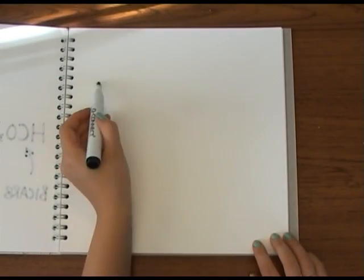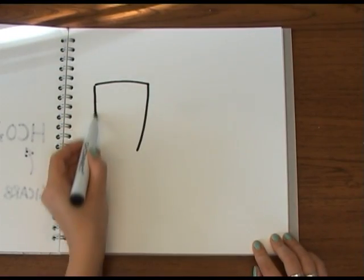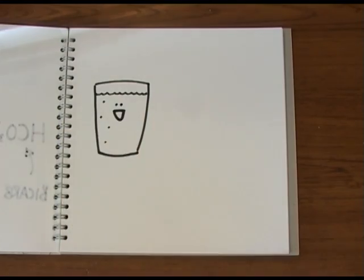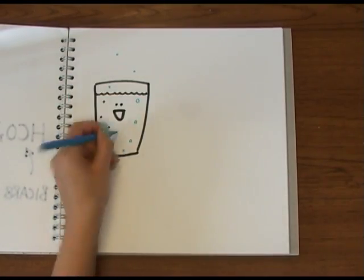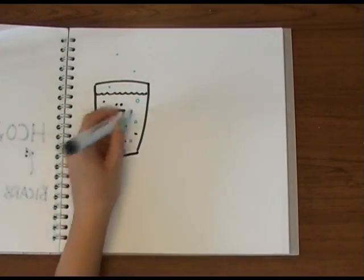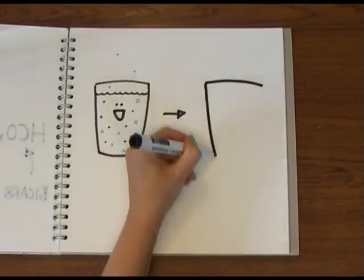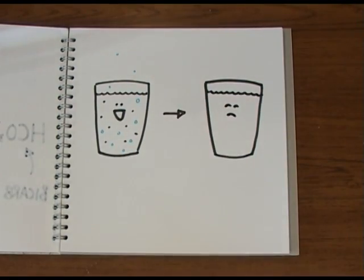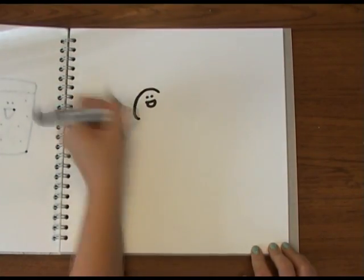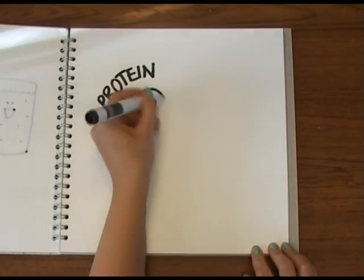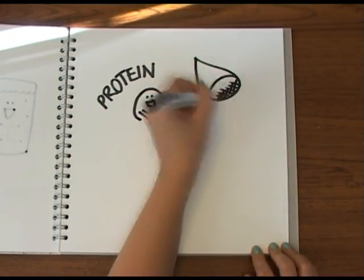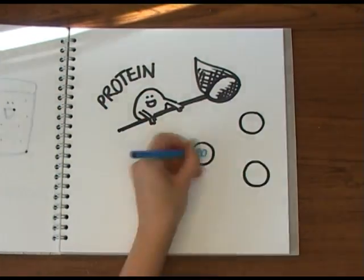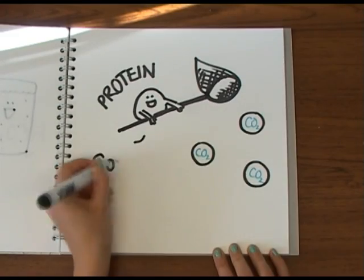But this isn't the whole story. Imagine a fizzy drink — this also contains bubbles of CO2, but eventually it goes flat as the CO2 is released and escapes. So what stops the cake going flat again? Well, that's where the eggs come in. The proteins in the eggs stop the CO2 bubbles from escaping and trap them in the sponge, keeping the mixture fluffy and risen.